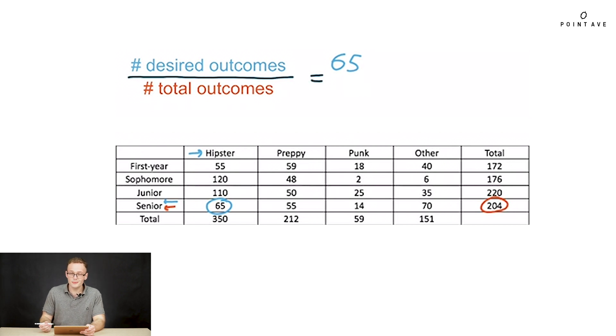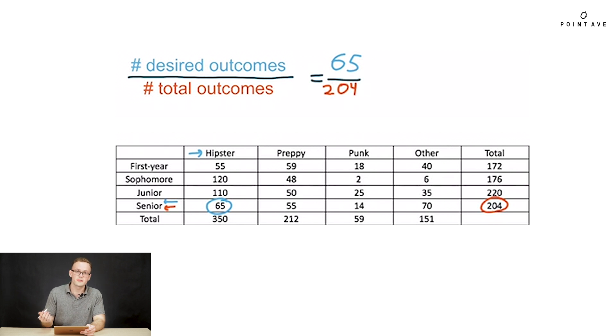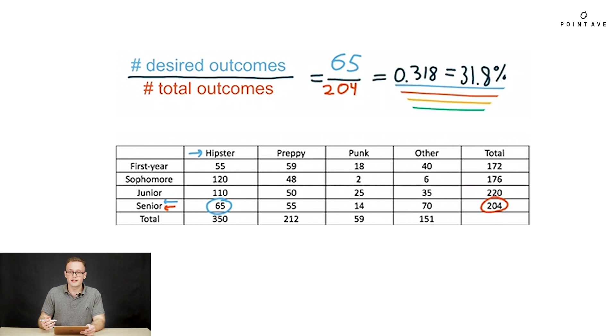So we look at the intersection of hipster and senior and find that there are 65 events. Now we look to the number of total outcomes — we can only define outcomes as those where the student is a senior, so that would mean all of the seniors only. Looking to our table, that's 204. Now we can substitute this into our equation and evaluate: our probability is 0.318, or 31.8%.